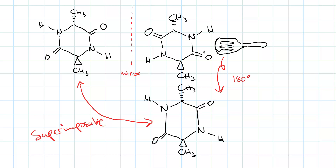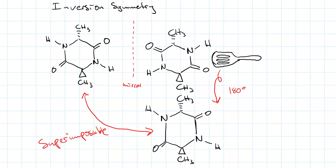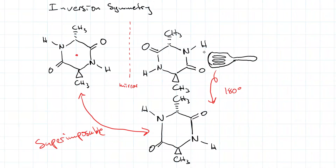So, this molecule does not have a mirror plane, but what it does have is an inversion point. An inversion point is at the center of a molecule, and you take every point on one side and flip it through that inversion point. Here I've got a methyl group going up — I reflect through — now it's a methyl group going down on the opposite side of the molecule. Having inversion symmetry makes a molecule meso.